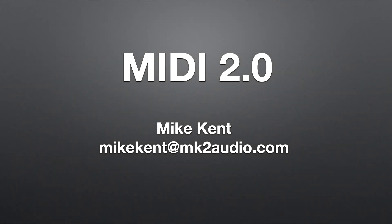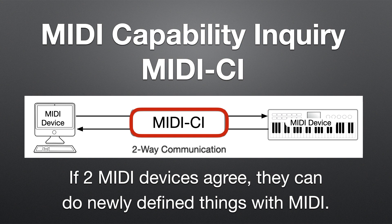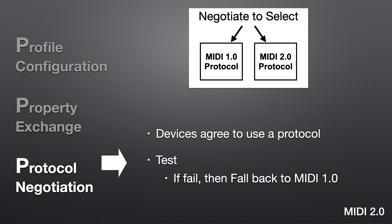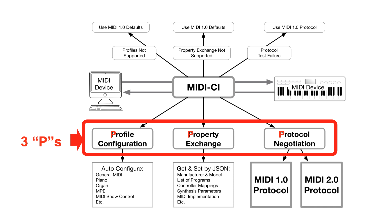Mike Kent from MK2 Audio introduces MIDI Capability Inquiry, or MIDI CI, the basis of how MIDI 2.0 devices can communicate and interact with each other. MIDI CI is the first foundation of MIDI 2.0. The fundamental idea is that if two devices agree, then we can do new things with MIDI. If two devices ask, 'do you support the new things?' and the answer is yes, great. If it's no, you just continue to use MIDI 1.0 as always — no change.